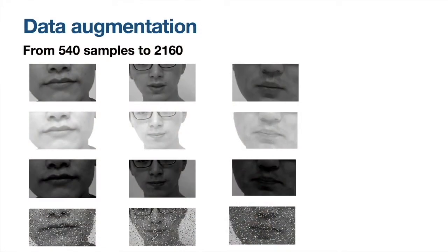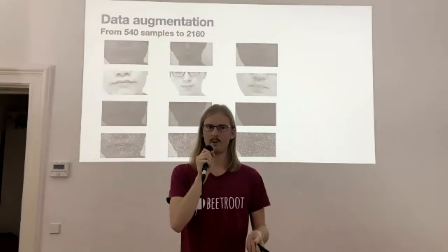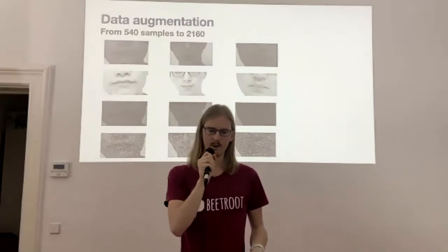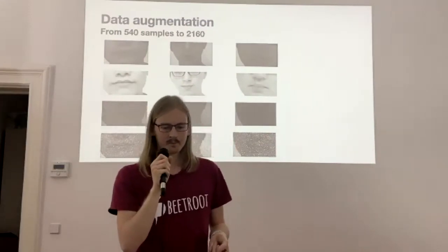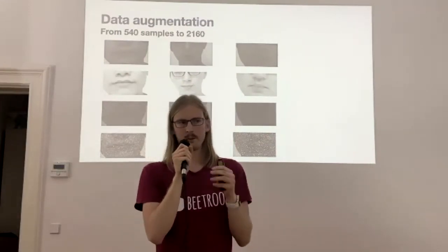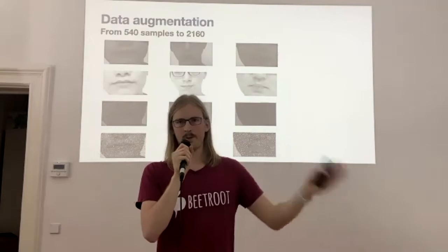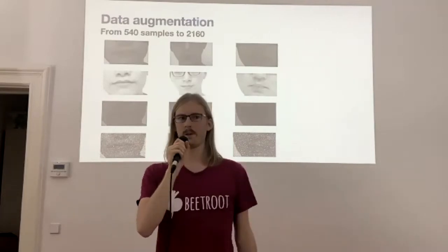So we turned to our old friend data augmentation — basically creating new versions of the same data set so that you can train your model on more data. In my case, I created a version with increased brightness, one with decreased brightness, and one with salt and pepper noise, as you can see at the bottom. So suddenly we have not 500 samples but 2000 samples — much better.